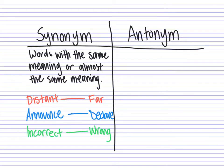The synonym of 'incorrect' is 'wrong.' Synonyms are words with the same meaning or almost the same meaning. Basically, you can replace a word with its synonym in a sentence. For example, 'You got this question incorrect on the test,' or 'You got this question wrong on the test.' They both have the same meaning and the sentence doesn't change. Those are all examples of synonyms.